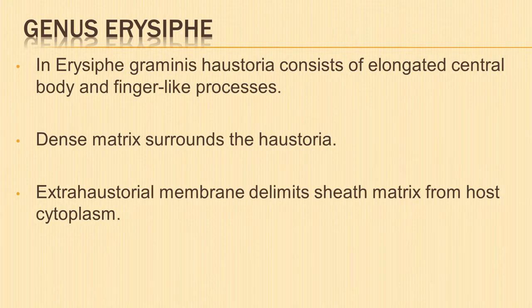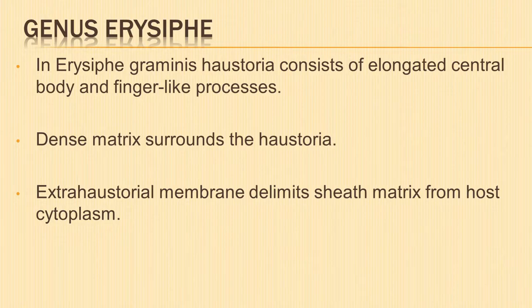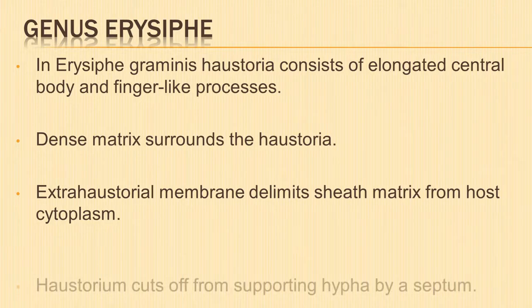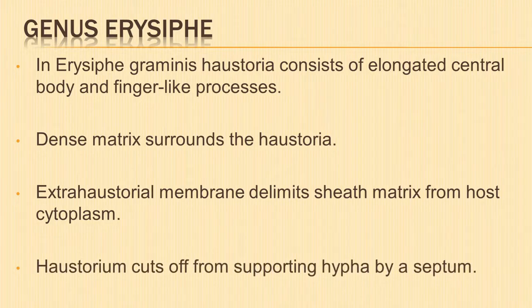This sheath-like matrix is known as sheath matrix or extra-haustorial matrix. A thin extra-haustorial membrane, or sheath membrane, or encapsulation membrane, delimits the sheath matrix from the host cytoplasm. The sheath membrane is a derivative of the plasma membrane of the host cell. The haustorium is cut off from the supporting hypha by a septum and contains mitochondria.